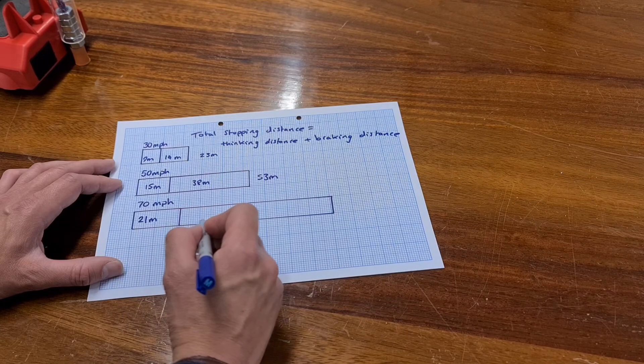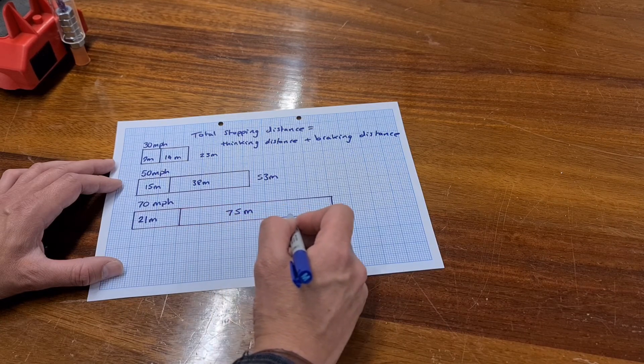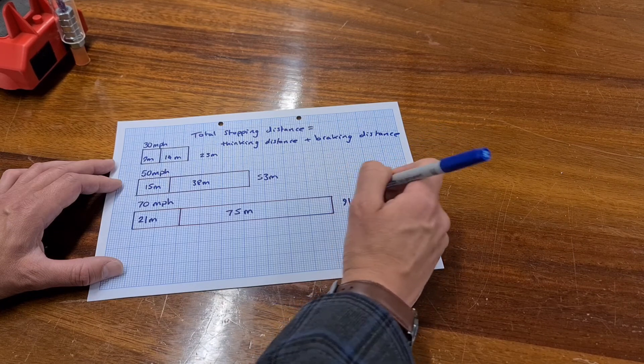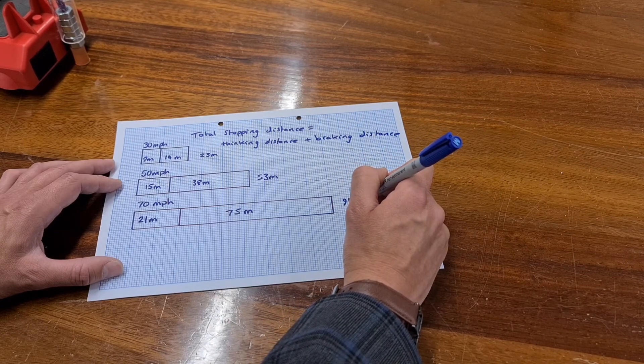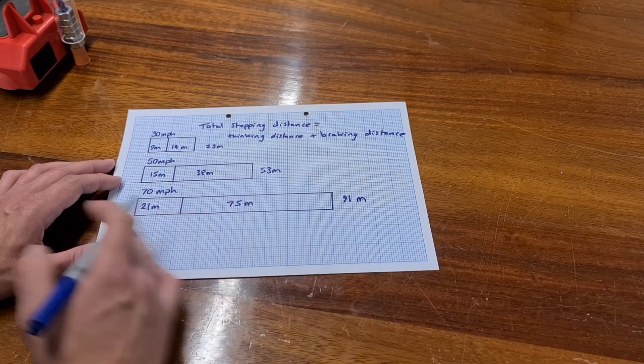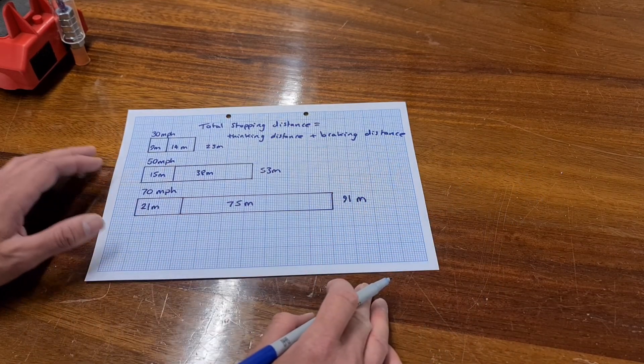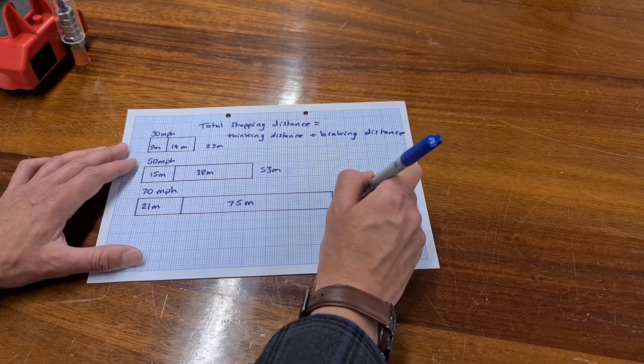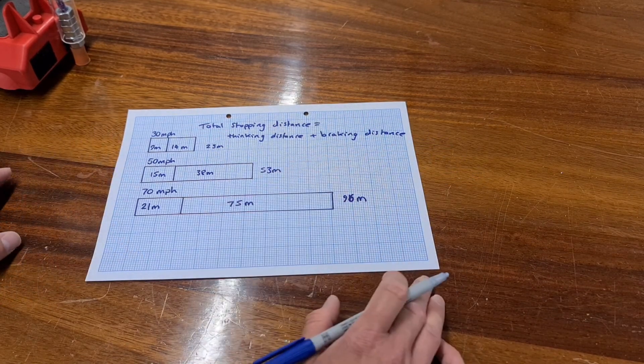Which means we've got 10, 20, 30, 40, 50, 60, 70, 80, 91 meters of stopping distance. That is unless I've miscounted somewhere, which is very, very possible. 96. Yeah, 96. Thank you Mr. Ferguson. 96. Got my maths in there.